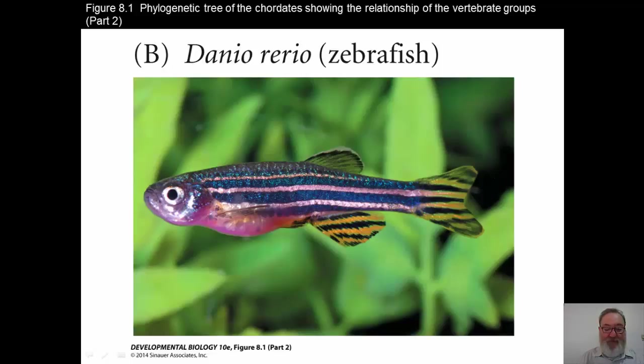Being a transparent embryo is a great advantage for embryologists and developmental biologists, because using the new microscopy methods, it's possible to see the internal organs very readily and to follow their development. And if you label those embryonic structures, you can follow where development takes the various precursors to those structures.